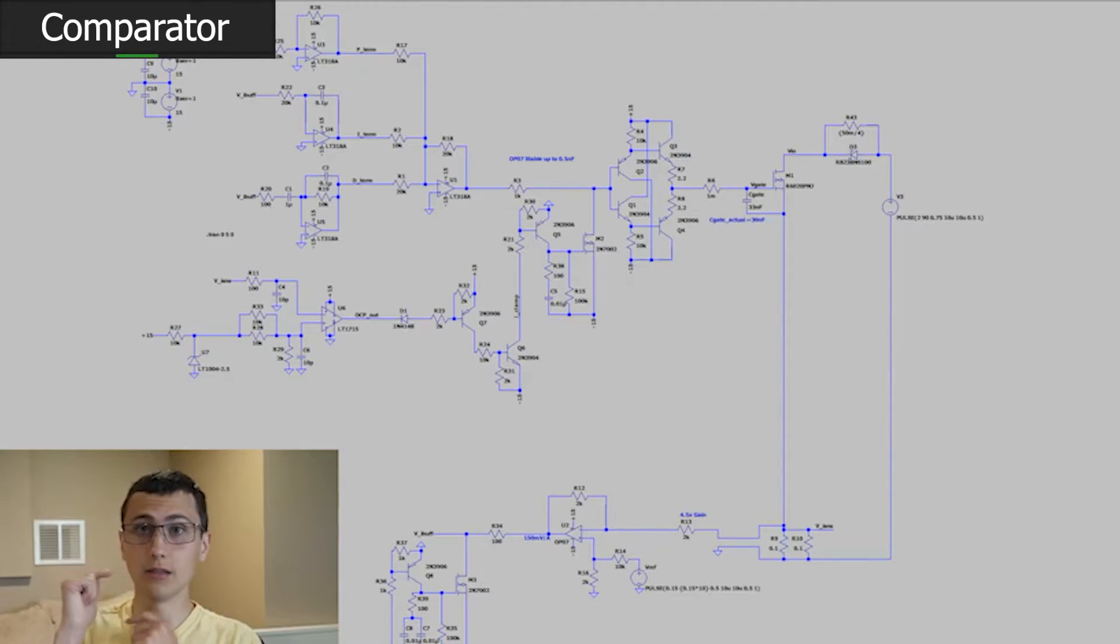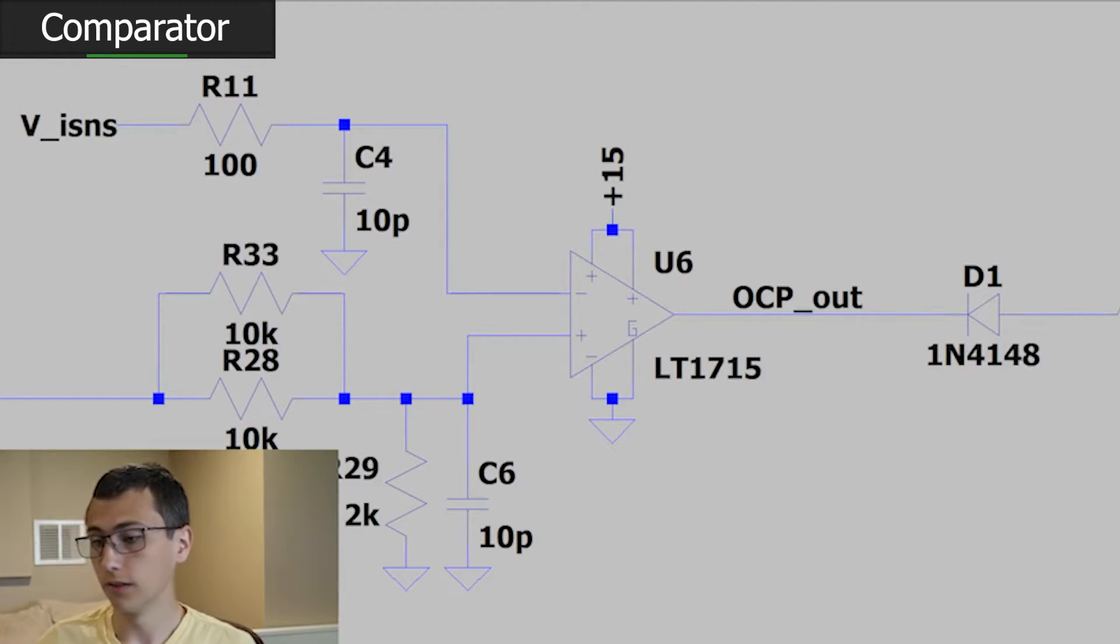The comparator is one of the simplest parts of this architecture. Basically, it looks at the reference versus the current input. If the current is too high, it will turn on the output. In this case, because of the way that we've configured it, the iSense comes in on the negative terminal. So whenever iSense is greater than the reference, it will output logic level zero, or in this case, that's ground. And when the opposite is true, it will output 15 volts.